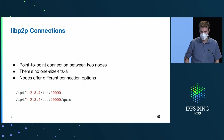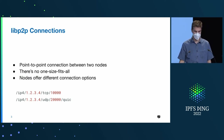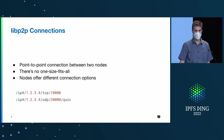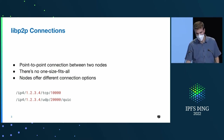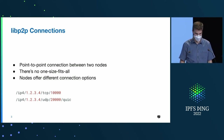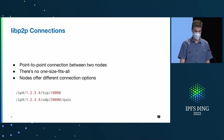So in general, what is a LibP2P connection? It's a point-to-point connection between two LibP2P nodes. And since there's no one-size-fits-all, each LibP2P host offers different connection options. They are encoded in multi-addresses. You can see there's a multi-address for a TCP listener on port 10,000 and for a QUIC listener on port 20,000.